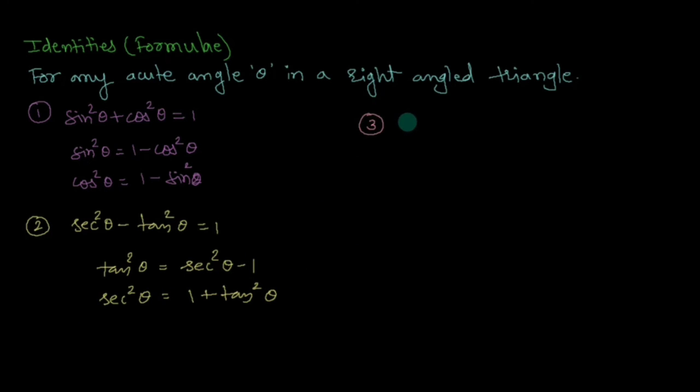Third is cosec²θ - cot²θ = 1. Or you may write it as cosec²θ = 1 + cot²θ, or cot²θ = cosec²θ - 1. Same formula but written in different forms.